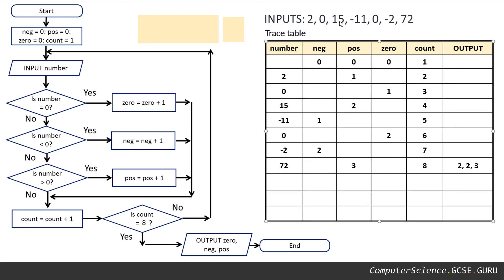For example, if you get given ten input values to put into the flowchart, don't be surprised if the last two or three values actually never get entered into the flowchart, because by that point it's already finished and you've been told to output a value and it's over.